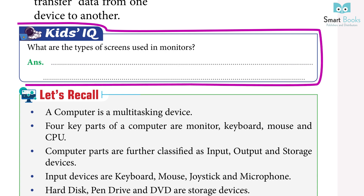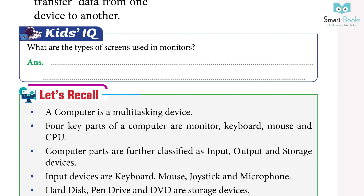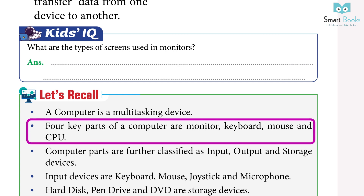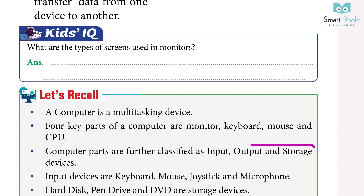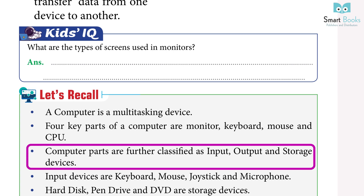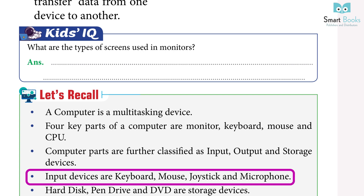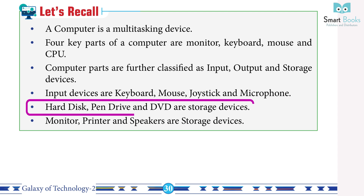Let's recall: a computer is a multi-tasking device. Four key parts of a computer are monitor, keyboard, mouse and CPU. Computer parts are further classified as input, output and storage devices. Input devices are keyboard, mouse, joystick and microphone. Hard disk, pen drive and DVD are storage devices.